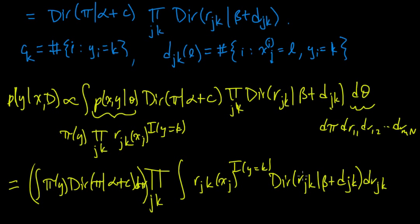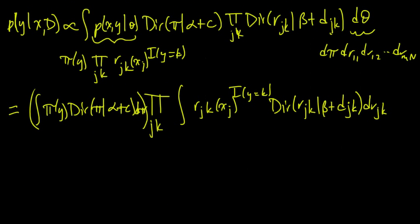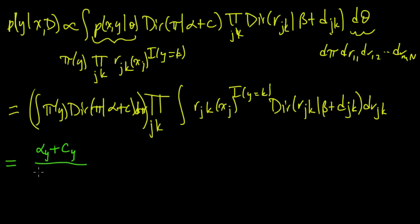Things are looking very good. This first piece — integrating π(Y) against the Dirichlet posterior — is just the expected value of π(Y) under this posterior distribution. We know the expected value of a Dirichlet distribution, so the Y-th component is just (α_Y + C_Y) divided by the sum of all those over Y.